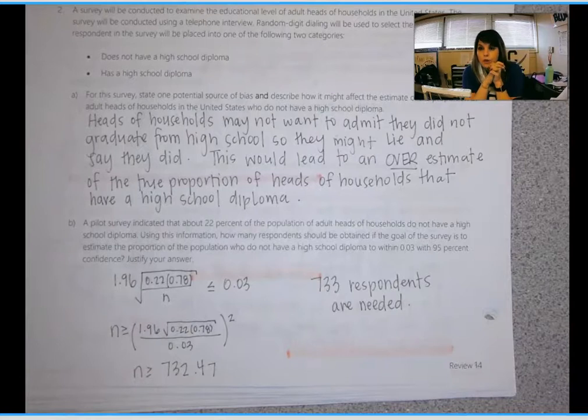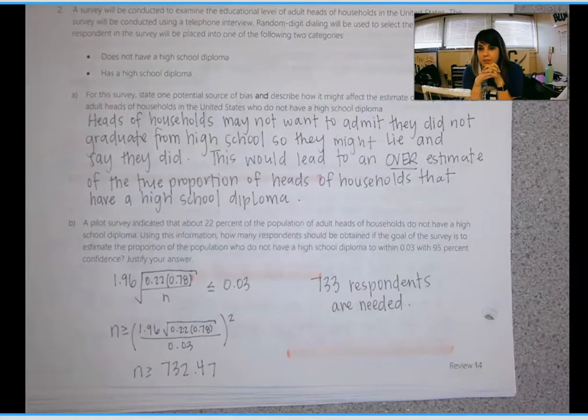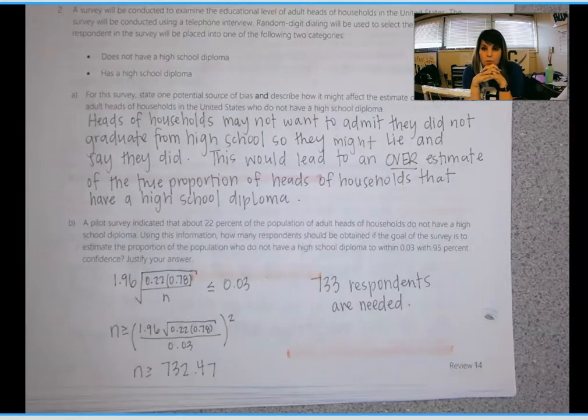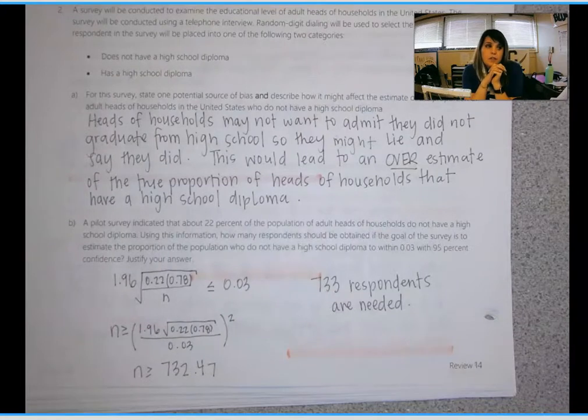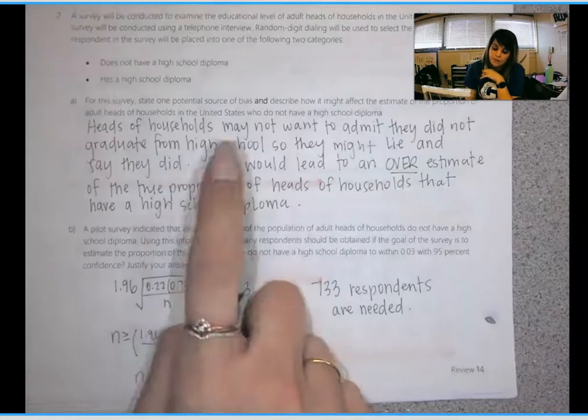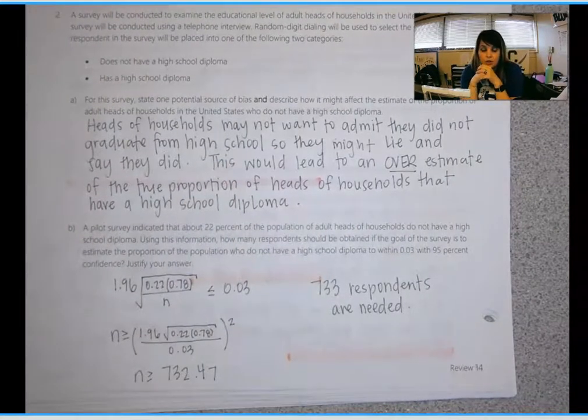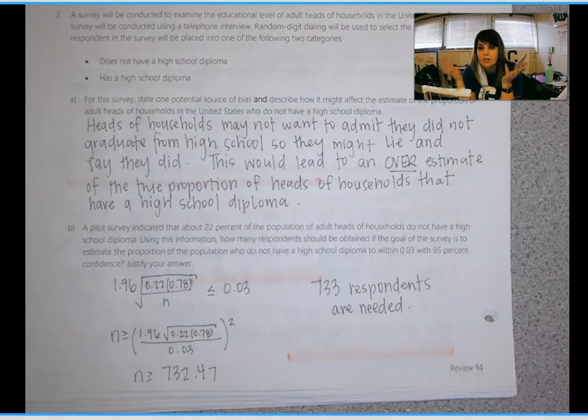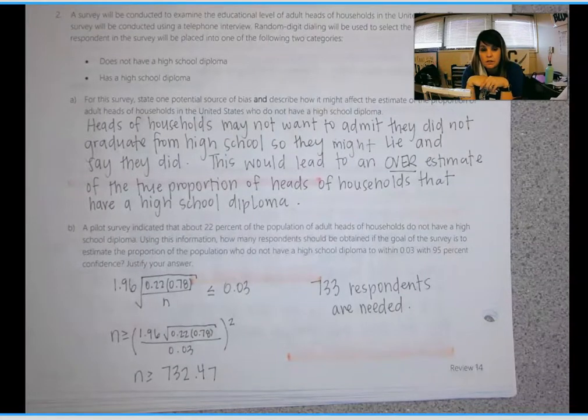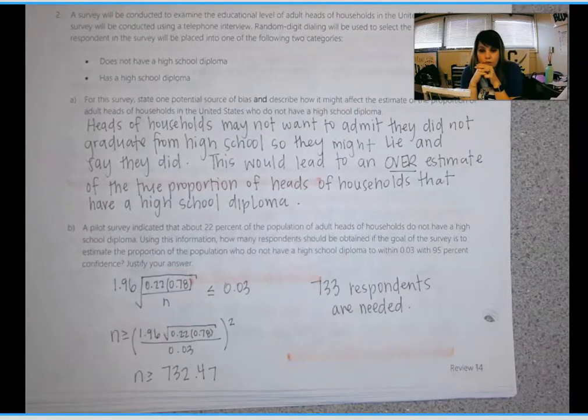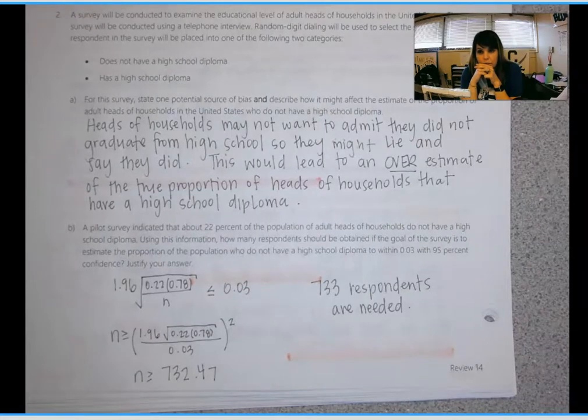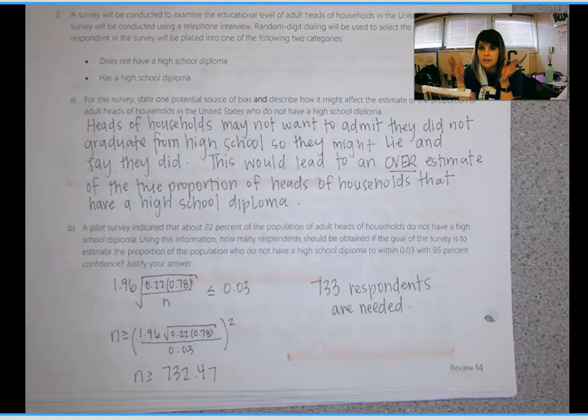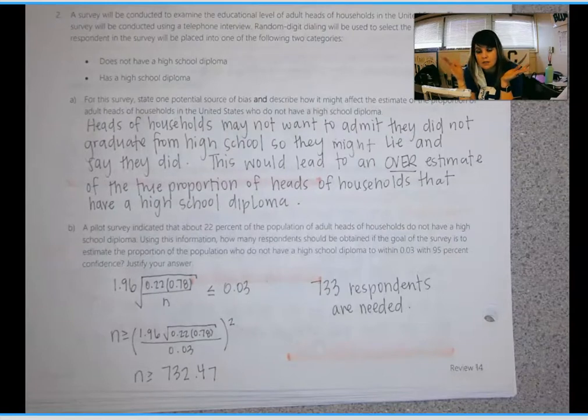So part A on number two, I'll just hopefully alleviate some of the burden in studying and let you know that you will not be tested. You will not be asked a question like part A. But it is something worth thinking about and worth understanding. The very last unit that we do before your AP exam is a whole unit on this idea. So describe how you could have bias. Bias is similar to an error. Describe how you could end up getting a sample that doesn't represent the population. So in this case, heads of households could lie about whether or not they graduated high school. If you're going to lie, obviously you're going to lie and say yes, I graduated. Which would result in an estimate for the population that is too big. So it would be an overestimate.